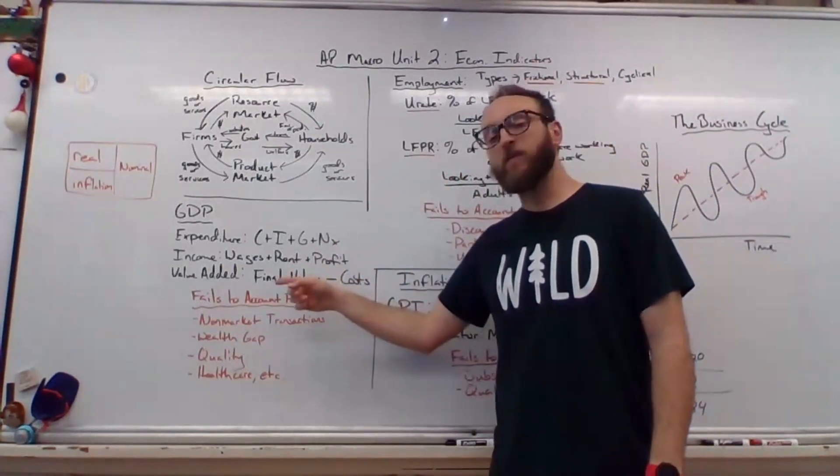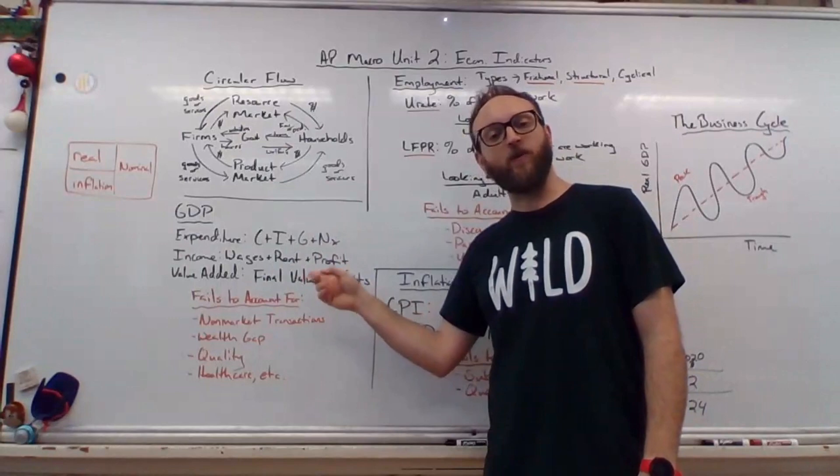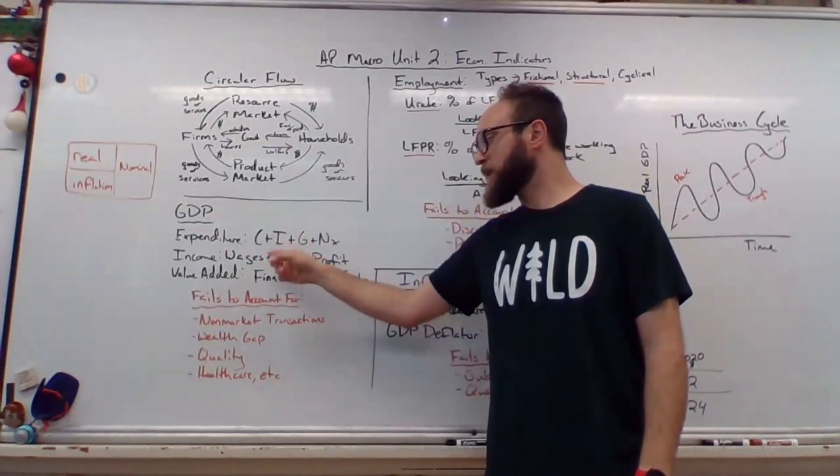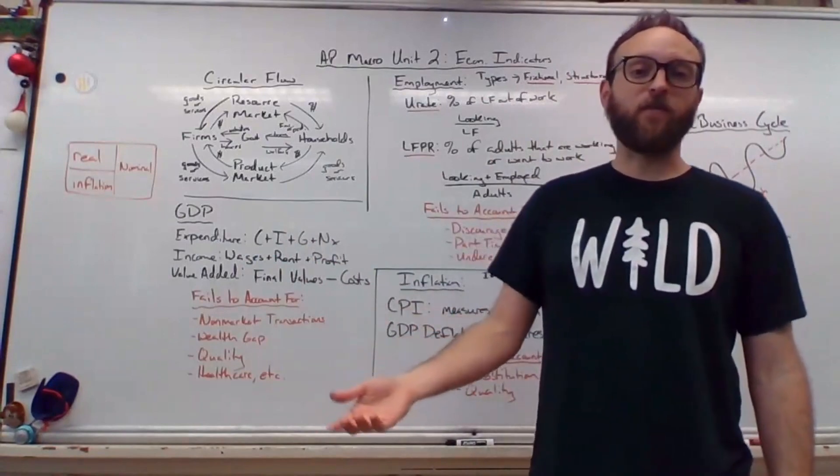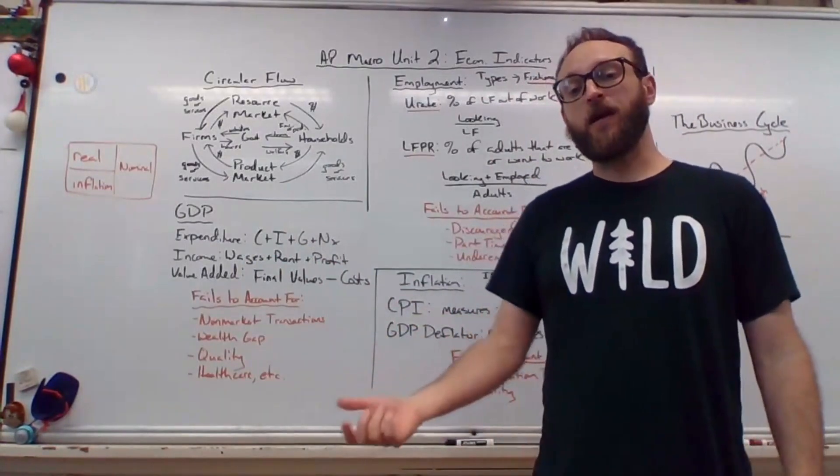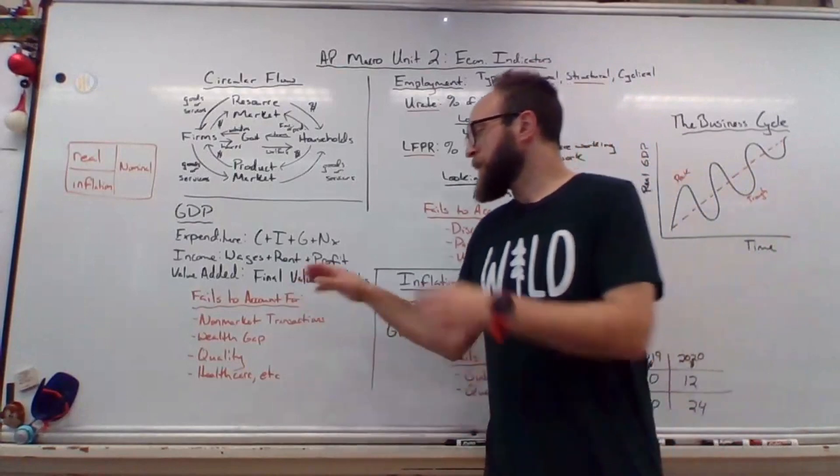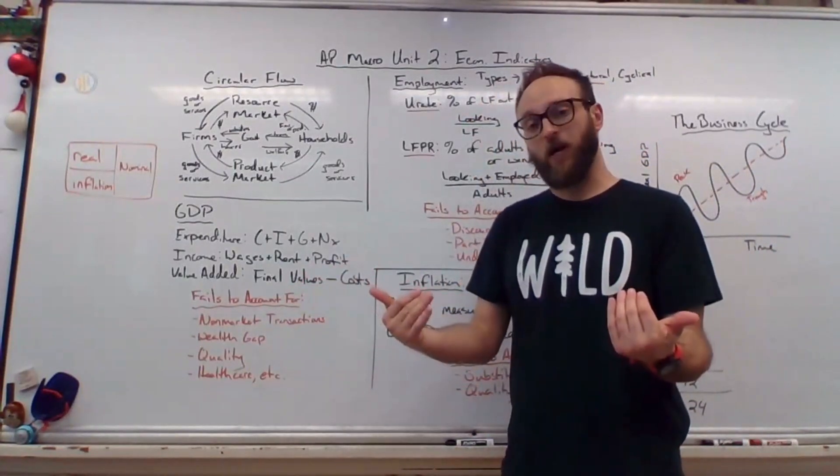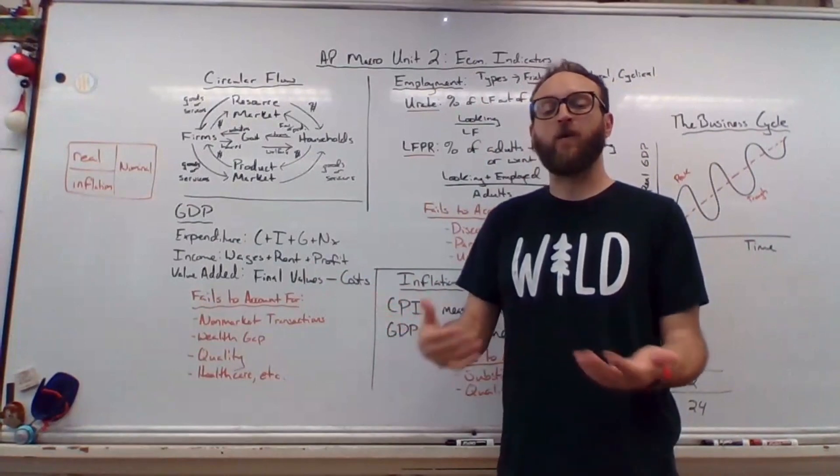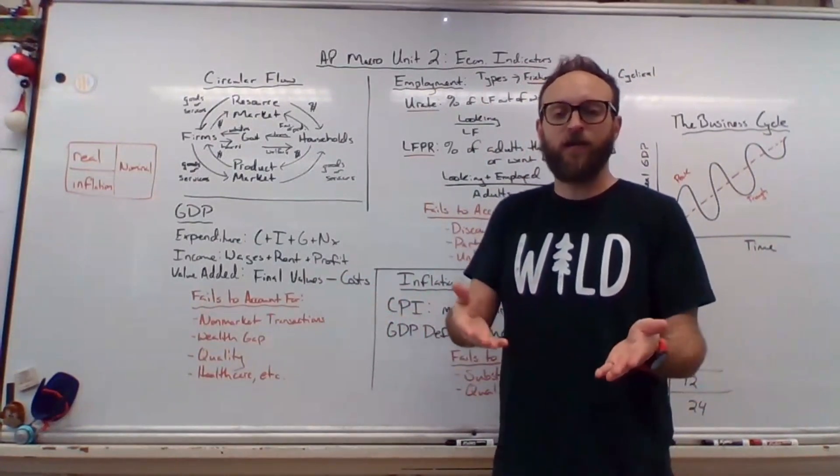The other two options would be the income approach and the value-added approach. Income is just wages plus rent plus profit. That essentially just means anytime somebody's making money, you add it all together, that's GDP. The third option is value-added, which would be the cost of everything when it's a final product minus input costs. So you're really trying to ascertain what everybody's adding to the product when they finally sell it.